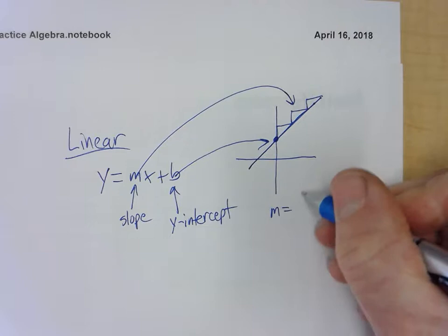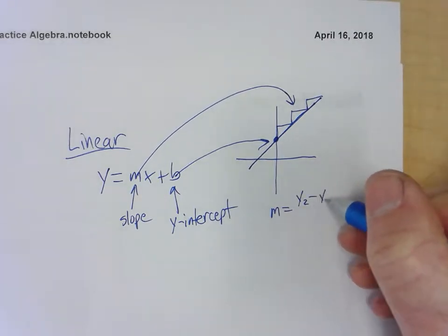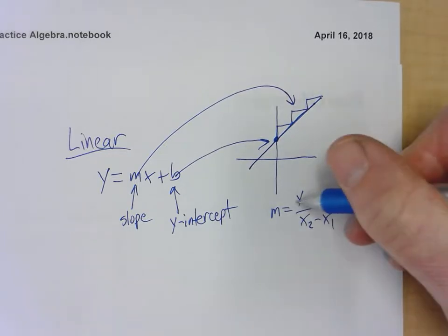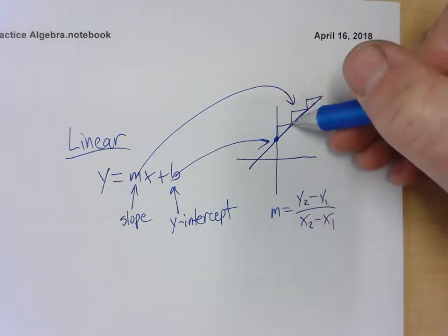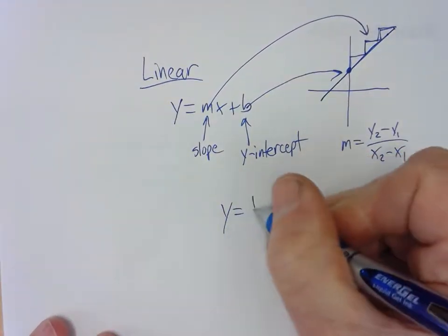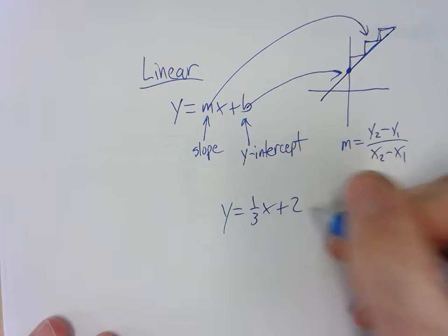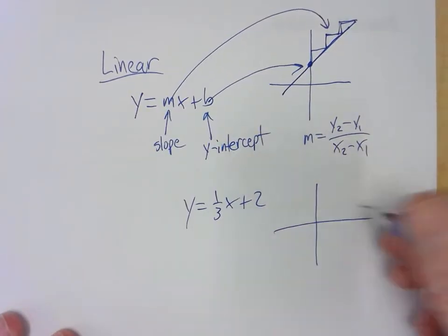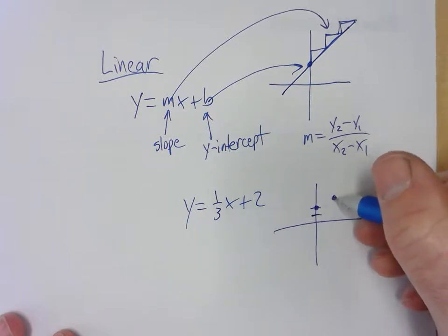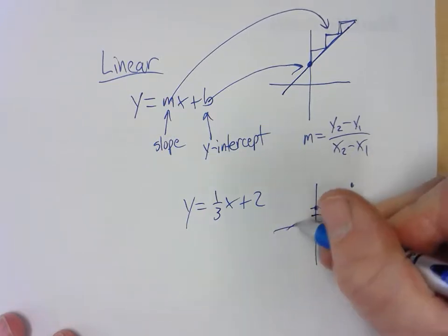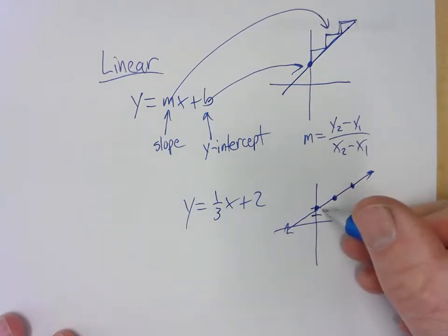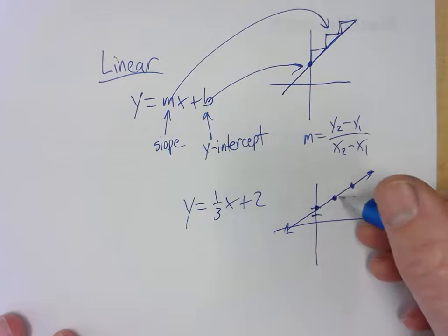The slope formula is the difference of the y values over the difference of the x values — how y changes versus x. So if you have y equals one-third x plus 2, you would start at 2 and then a slope of one-third, so you go up 1 over 3. The starting point is where you begin, and the slope is how you travel.